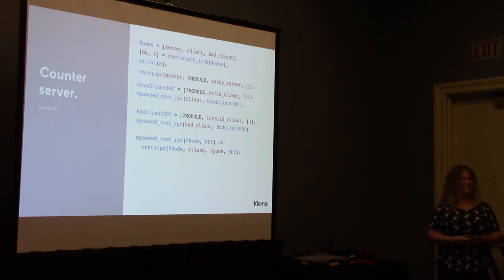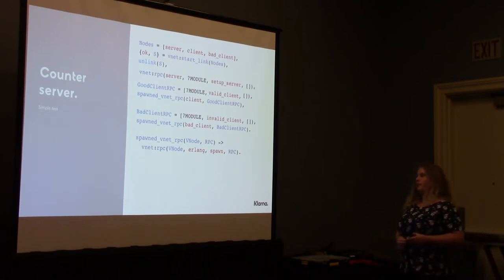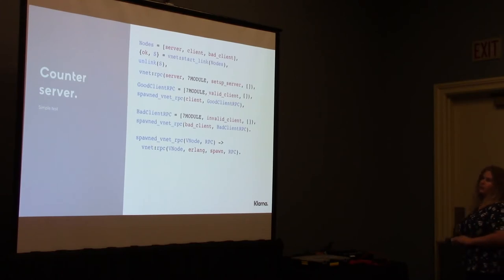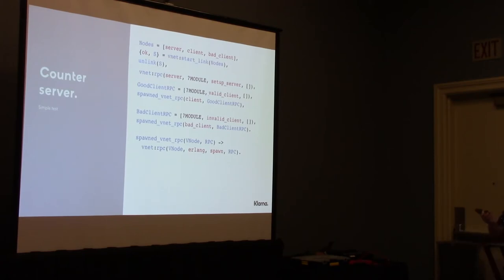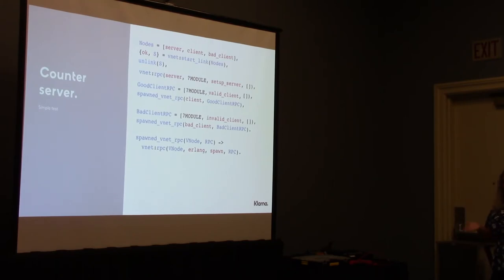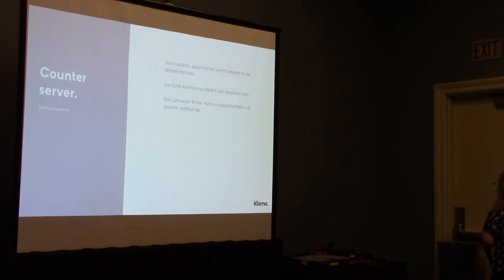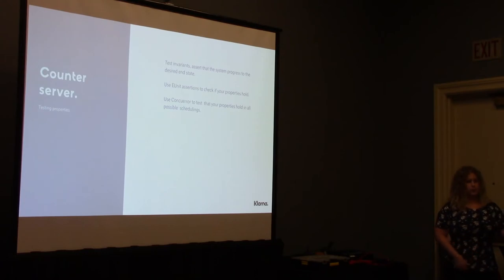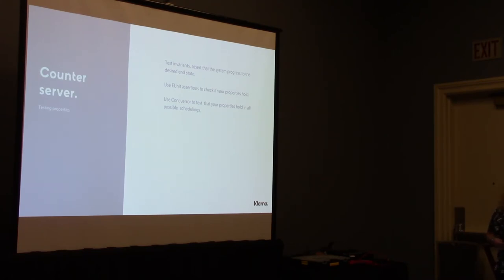With this setup, we achieve that the two clients will run together at the same time. Since we use ConcuerError, we can be sure that there will be one execution where the good client runs first and then the bad client follows, and another one where the bad client first crashes the server and then the good client runs. We should test invariant and progress properties, which is what we usually test with ConcuerError. We can use EUnit to observe these properties, and then use ConcuerError to explore all possible schedules.